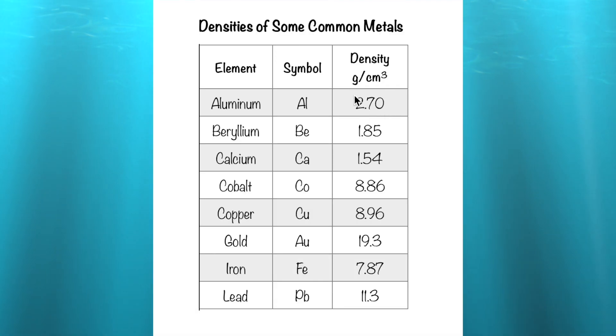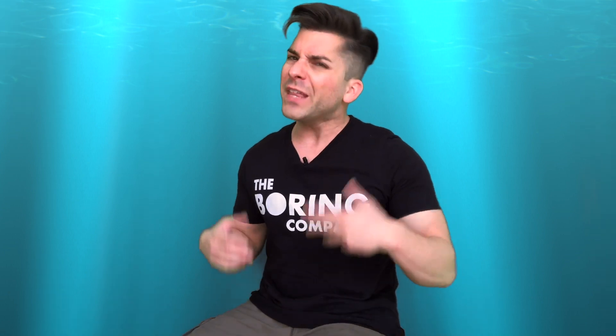What's also interesting is that the density of a pure substance, like the elements on the periodic table such as aluminum, can never change. Let's compare our answer to this density chart. Look how close our answer of 2.8 is to the true density of 2.7. Why do you think it's not exactly 2.7? Think about the tools used to measure — we can discuss this further in class.